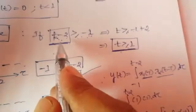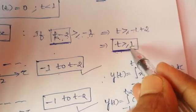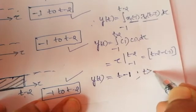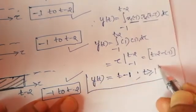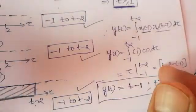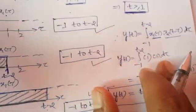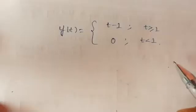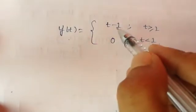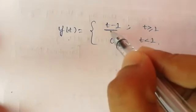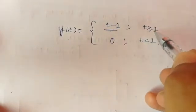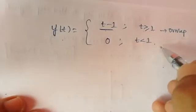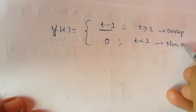This result applies for the condition t−2 ≥ −1, which simplifies to t ≥ 1. So we have the overlap case giving amplitude t−1 when t ≥ 1. We have only one overlap case and one non-overlap case. Writing the answer in concise format: y(t) = t−1 for t ≥ 1, and y(t) = 0 otherwise (non-overlap case).